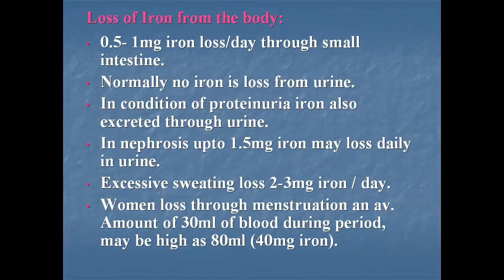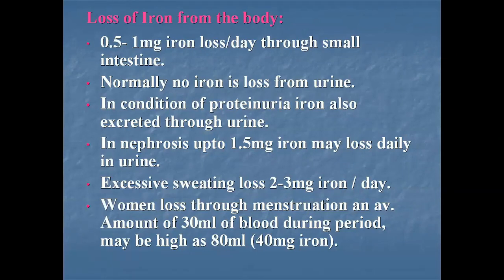In conditions of proteinuria, iron is also excreted in urine. In nephrosis, iron loss can be up to 1.5 mg daily through urine. With excessive sweating, iron loss can be up to 2 to 3 mg per day.